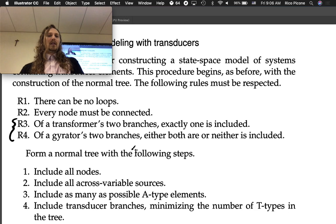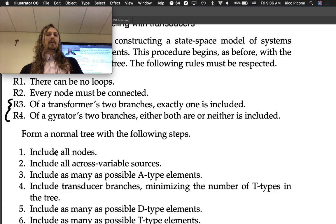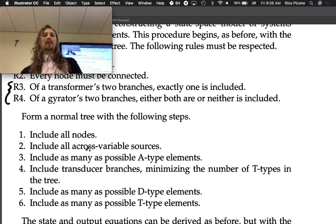Form a normal tree with the following steps. Include all nodes, same as before. Include all across-variable sources, same as before. Include as many as possible A-type elements, same as before. Nothing's changed.